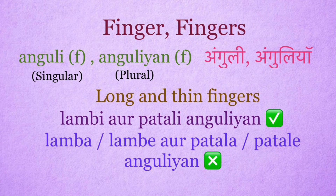Finger: anguli. Fingers: anguliyan. It's a feminine word. Long and thin fingers: right use is lambi aur patli anguliyan. Wrong use: lamba or lambe, or patla patli anguliyan.